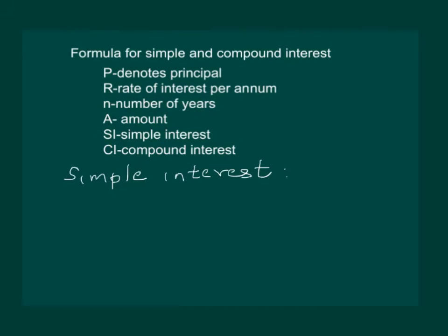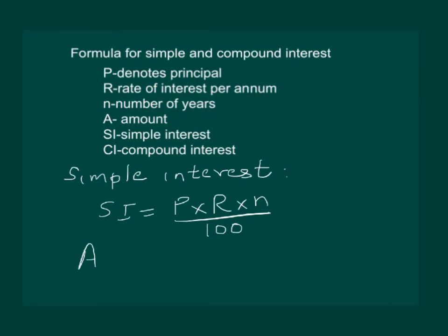For simple interest, the formula is: SI = (P × r × n) / 100. The amount is calculated as A = SI + P. Using the SI formula gives the interest to be paid, and using the amount formula gives the total amount to be returned when the interest is simple interest.